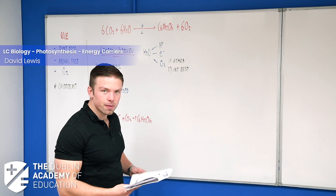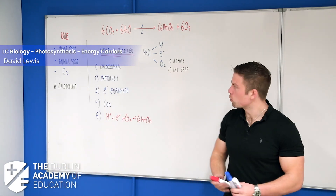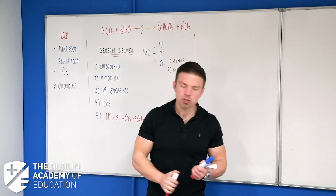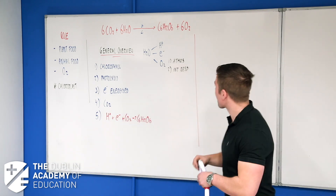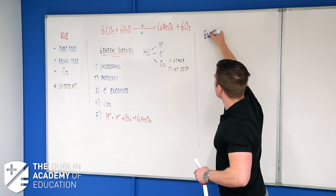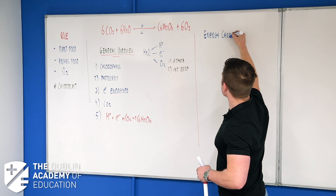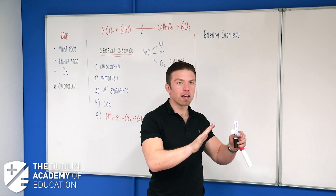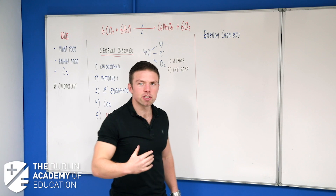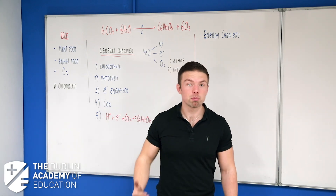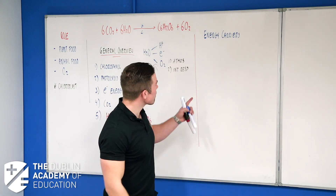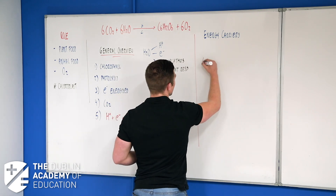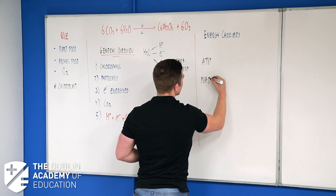We're going to start what I call our detail study, and it's going to start with one of our ideas that I mentioned before — something that can fill up many different styles of questions. I've put a star beside this. It's something called energy carriers. On the course you actually only need to know two: ATP and NADPH.